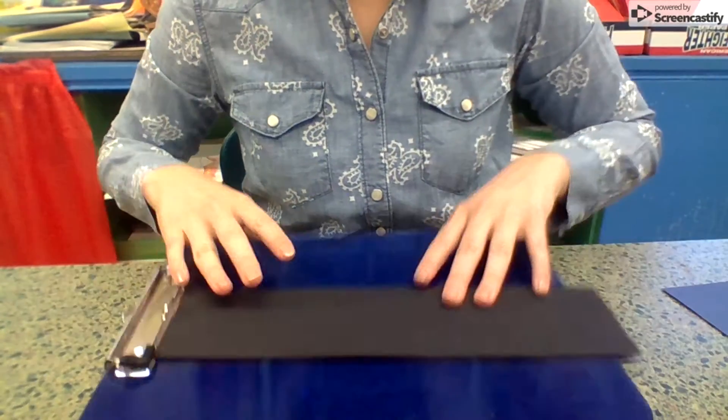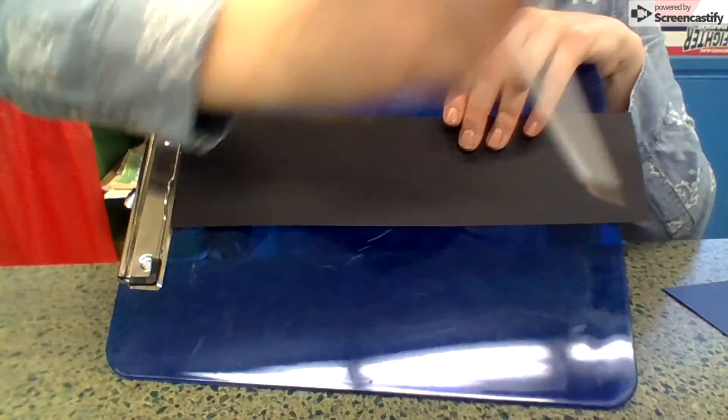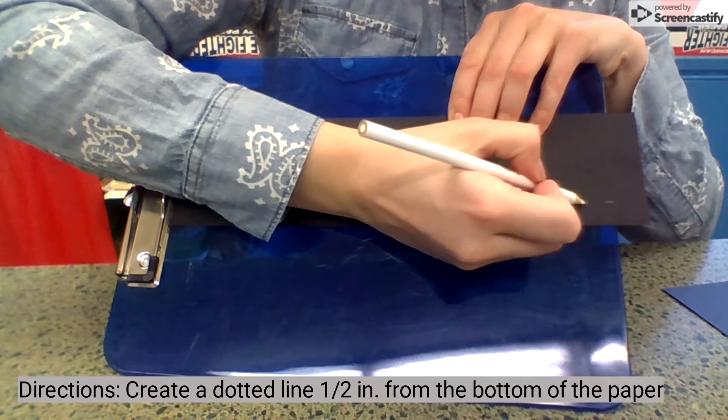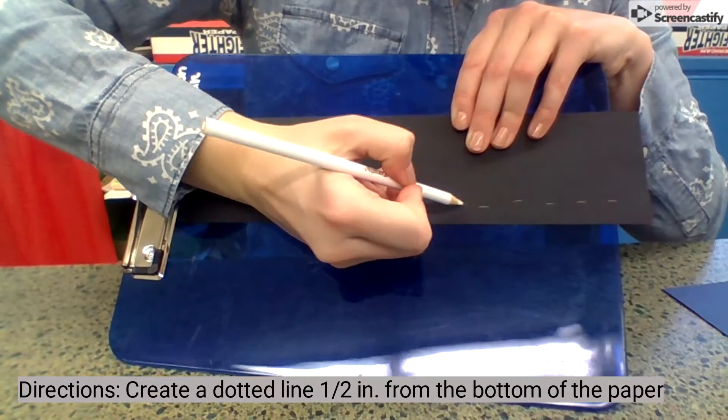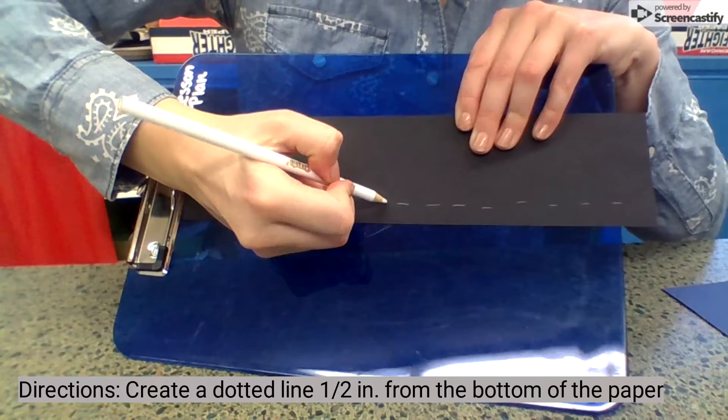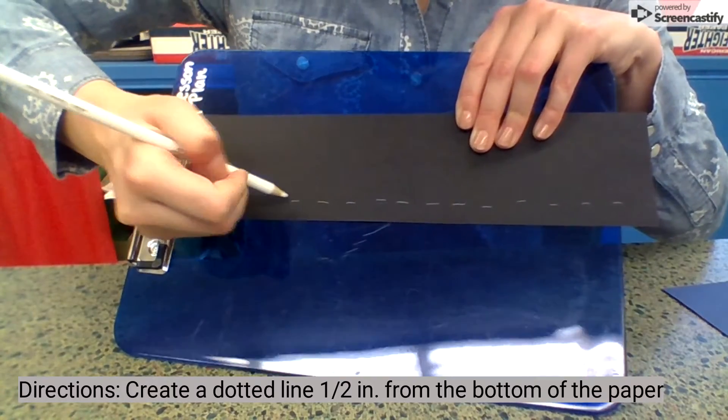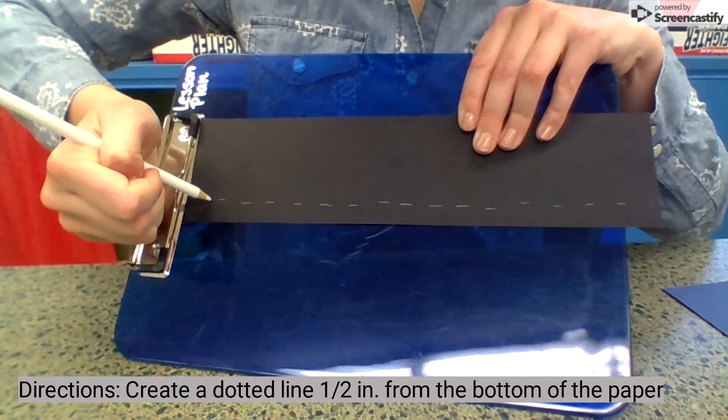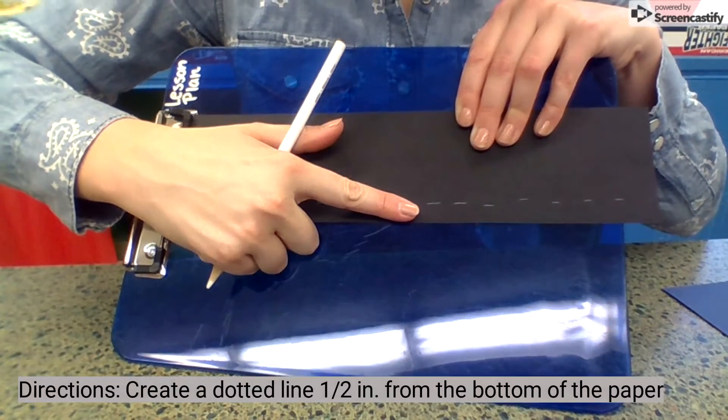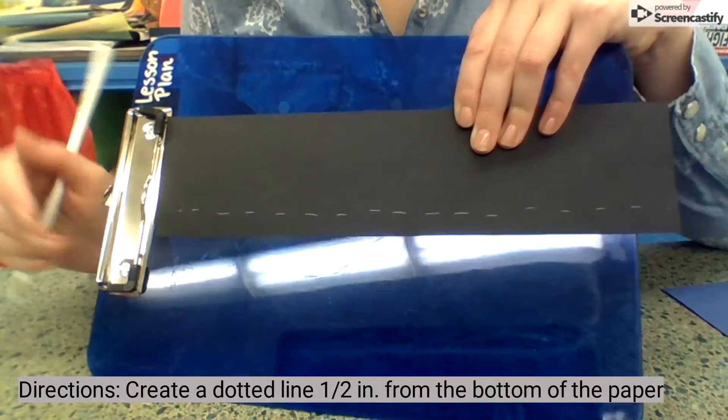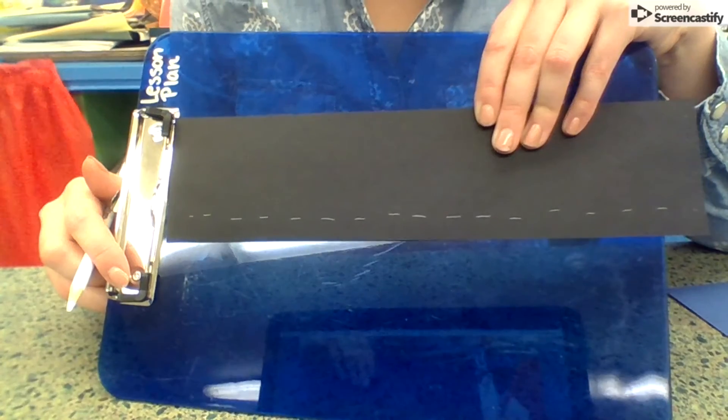First you are going to start with creating a dotted line about half an inch from the bottom of your paper. And you do not need to use a ruler, because if you put your finger right down there, that should be about half an inch. We can just estimate.